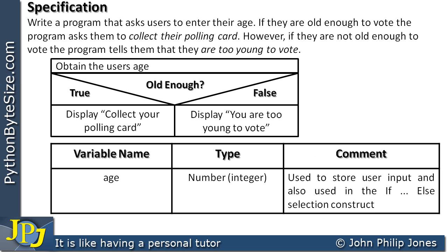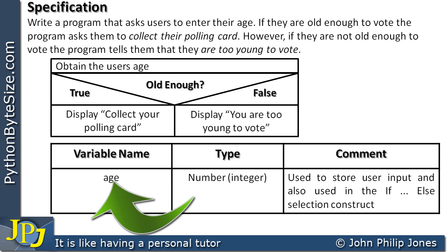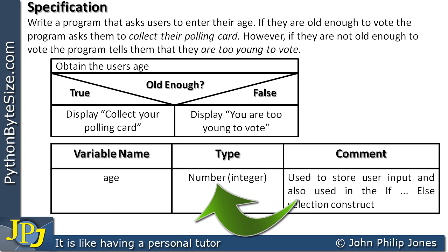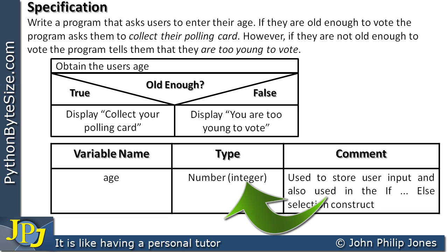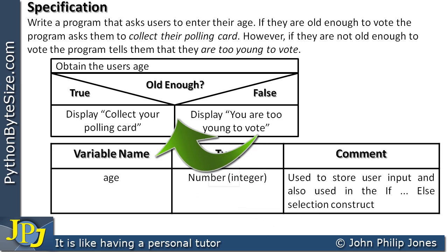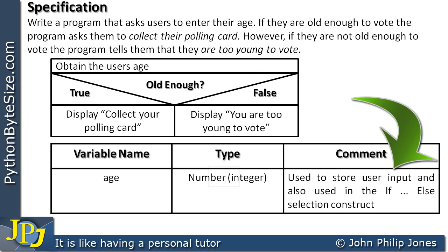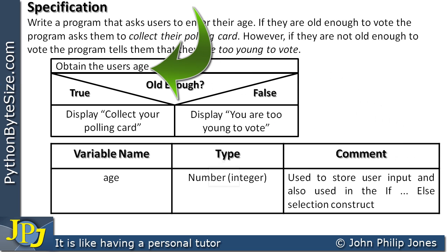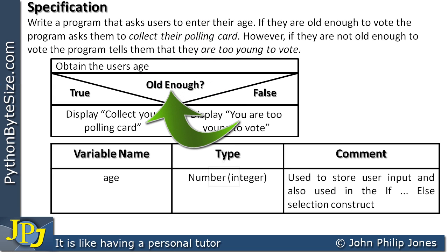Once the steps of the program are sorted, we need to consider the variables the program needs in order to function. I've produced a data table with a variable called age. For this program there's only one variable, and its type is going to be an integer, because we're entering people's years of age — not fractions for months. The comment notes it's used to store user input obtained at the first step, and also used in the if-then-else selection construct where we ask 'old enough?'